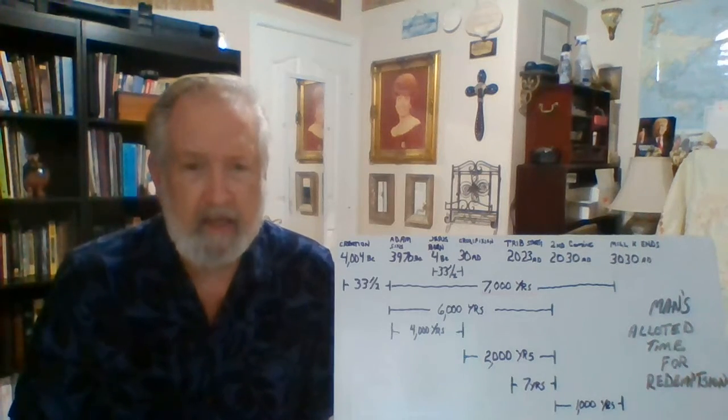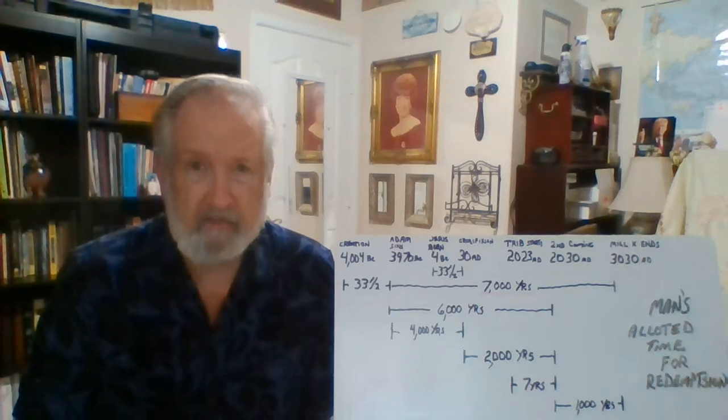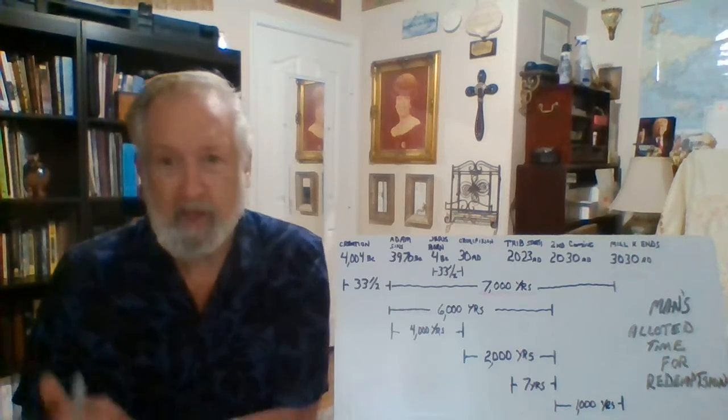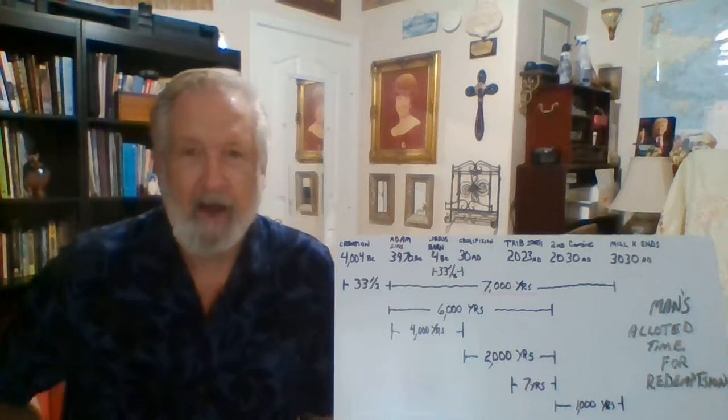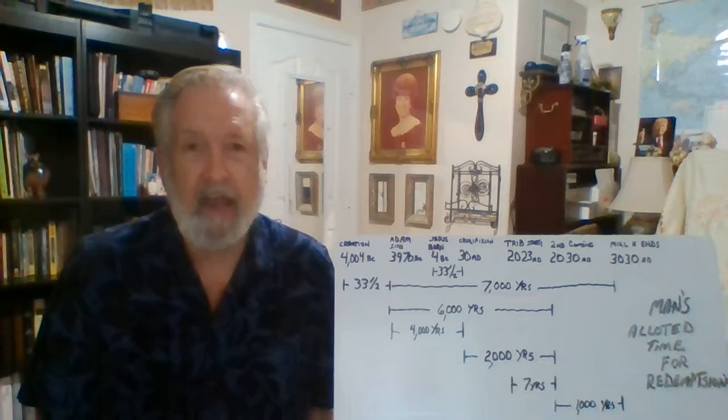And the way that we get to that date is we start with the death of Jesus. And we go back 4000 years, which takes us to 3970.